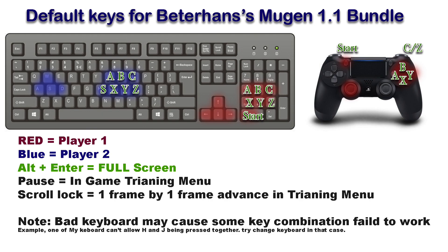As you can see on the screen, I have an example key mapping. The red one is player one and the blue one is player two. Every player has seven keys: A, B, C, X, Y, Z, and Start.